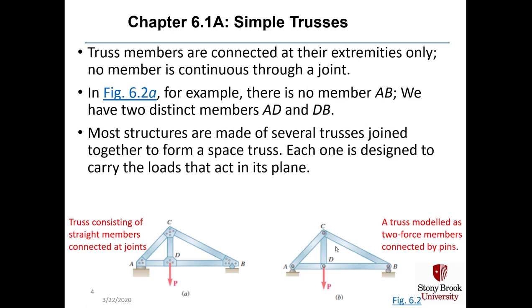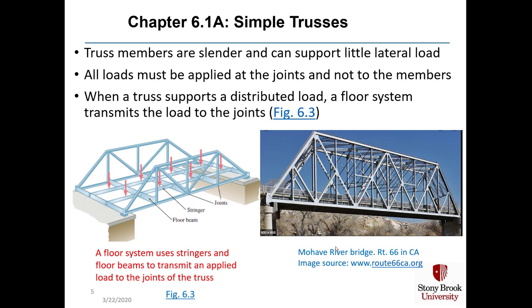Truss members are connected at their extremities only; no member is continuous through a joint. In figure 6.2a, for example, there is no member AB — there are only two distinct members AD and DB, connected at joint D. Most structures are made of several trusses joined together to form a space truss, and each one is designed to carry the loads that act in its plane. In figure 6.2b, we see a truss modeled as two-force members connected by pins — this is just a model.